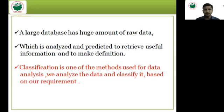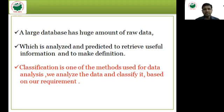Generally, a large database has a huge amount of raw data. If you consider a retail system, there are a number of records. If you want to get useful information from that entire database or raw data, you have to apply some queries. Each and every domain has its own raw data. This data is analyzed and predicted to retrieve useful information and to make decisions. You need some knowledge — and you get that knowledge from the data.